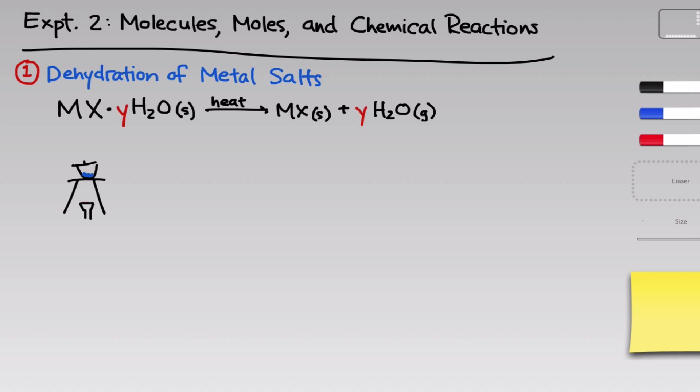We'll mass the crucible and lid before adding the sample and the crucible lid and sample together so that you know the initial sample mass. We'll then place the crucible lid and sample on top of a wire rack and place a Bunsen burner under that rack.